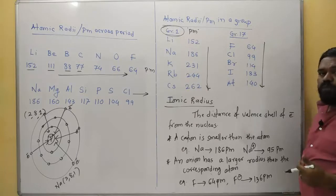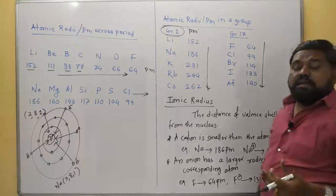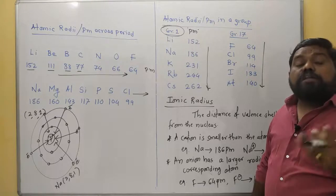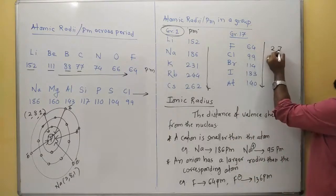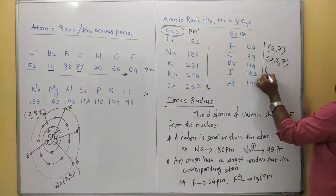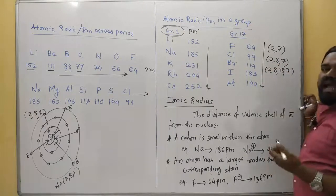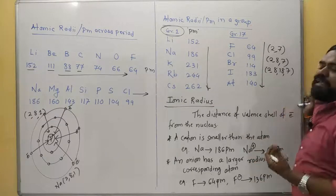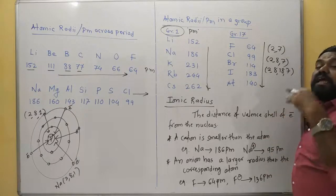As we move down the group, the number of shells goes on increasing. For example, configurations like 2,7 then 2,8,7 then 2,8,18,7 then 2,8,18,18,7 — the number of shells keeps increasing. Obviously atomic radii will also go on increasing from top to bottom in any group.